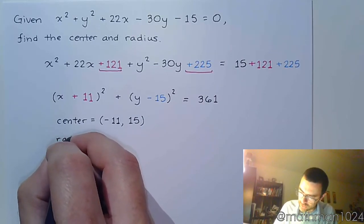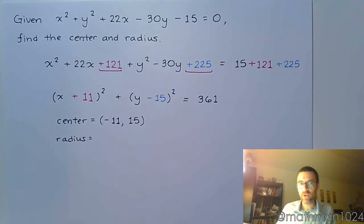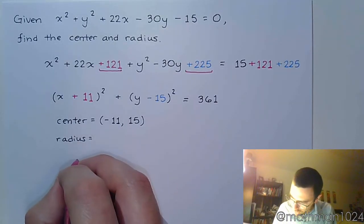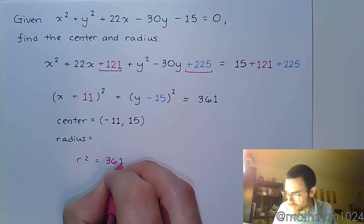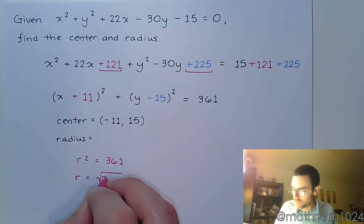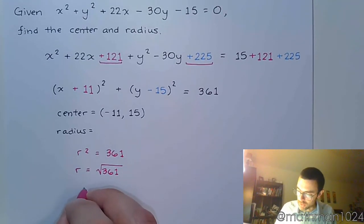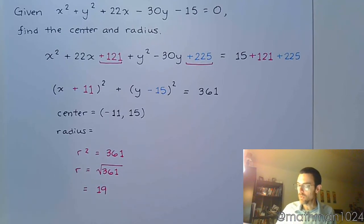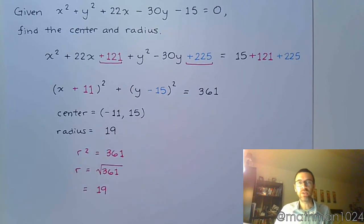And then we need to figure out the radius. So here's what we know about the radius. We know that r squared is equal to that constant on the other side, 361. So r is going to be the square root of 361. Well, fortunately for us, that is a perfect square and it's just 19. So r, our radius, is equal to 19.